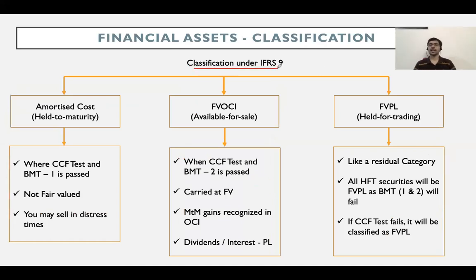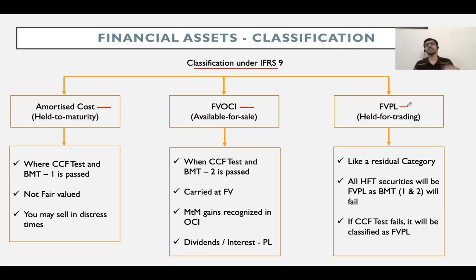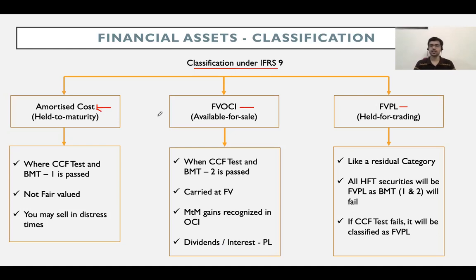Under IAS 39 we had three categories: held to maturity, held for trading, and available for sale. Under IFRS 9, those words are no longer used. The categories are: amortized cost, fair value through other comprehensive income (FVOCI), and fair value through P&L (FVPL). A financial asset is classified at amortized cost when the CCF test has passed and BMT1 has been passed — meaning your intent is to hold the asset to maturity to collect cash flows, and the future benefit is solely payments of principal and interest.